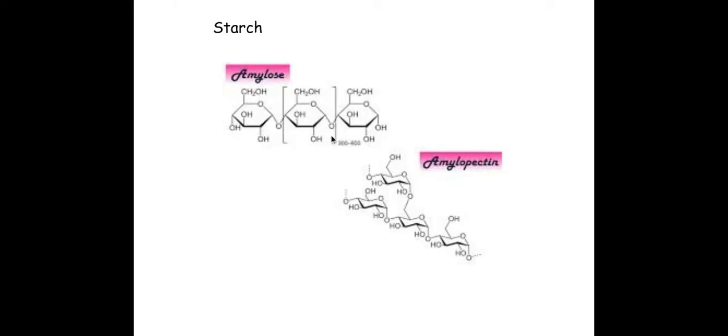So starch is made of amylose which has got alpha 1 to 4 glycosidic bonds. This creates a coiled compact structure which does not affect osmotic potential and it's ideal because it's compact.